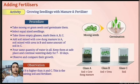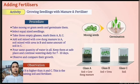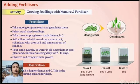Now let's perform an activity: growing seeds with manure and fertilizer. Procedure: First, take Moog gram seeds and germinate them. Select equal-sized seedlings. Take three empty glasses and mark them A, B, and C. Add soil mixed with cow dung manure in A, soil mixed with urea in B, and the same amount of plain soil in C. Pour the same quantity of water in all, keep them at a safe place, and continue watering daily for 7–10 days. Observe and compare their growth. You can observe that in glass B, the growth is much more than in glass A and C — this is the glass containing soil and fertilizer.